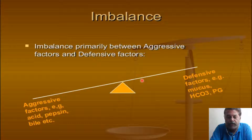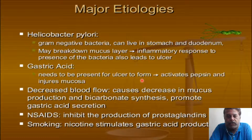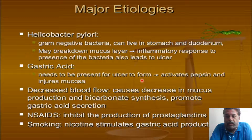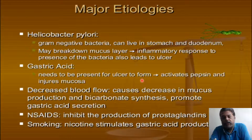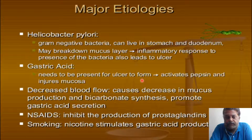This is the crux of treatment which we will discuss further. The major etiologies of ulcer formation are: Helicobacter pylori, a gram-negative bacterium that can live in the stomach and duodenum for months to years without having any problem because of the high gastric acid content - because they break the mucus layer and this inflammatory response causes a small ulcer. The gastric acid needs to be present for ulcer to form as it activates pepsin.